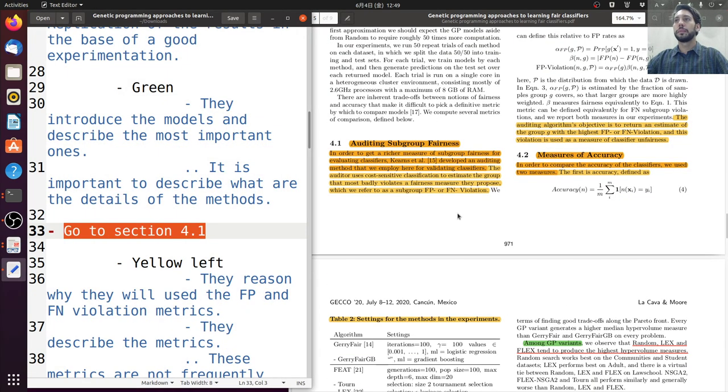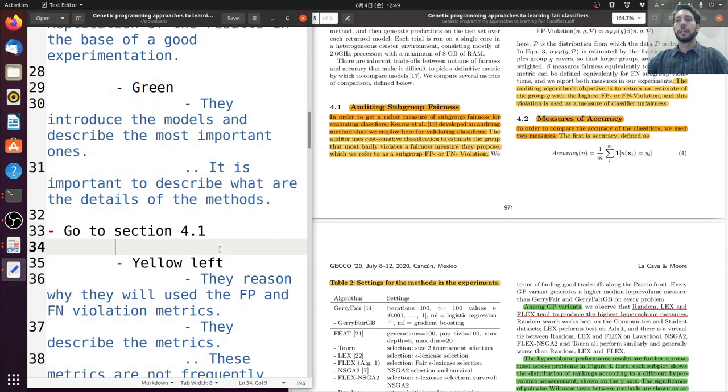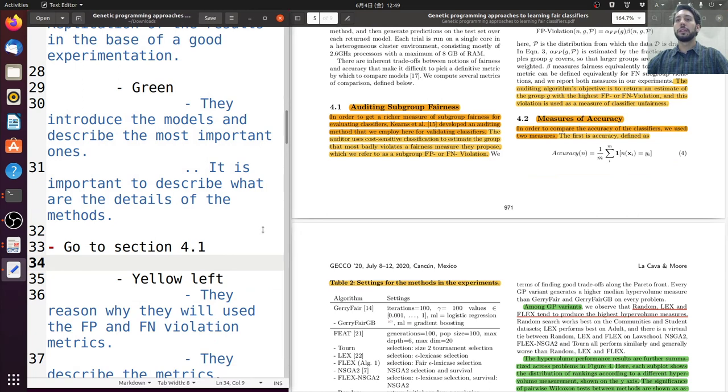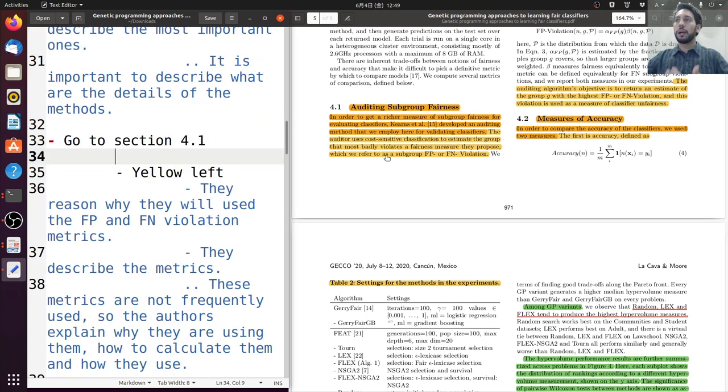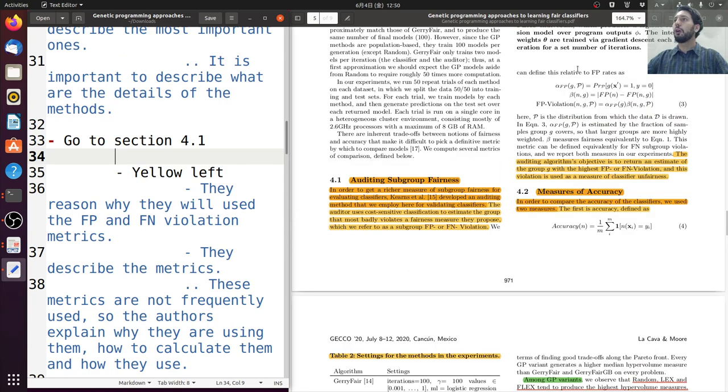So if we move on to section 4.1, here, we see in yellow the first part. That they reason why they are going to use this Fp and Fn violation metrics. They say, okay, in order to get a richer measurement of subgroup fairness for evaluation classifiers, there is this Kerns and all develop an audition method that we employ here for validation classifier. So why are you using this metric? These metrics are not common. They are somewhat specific. So they give an explanation what do the metrics do. How to calculate them. What the variables in those metrics mean and what they are for.